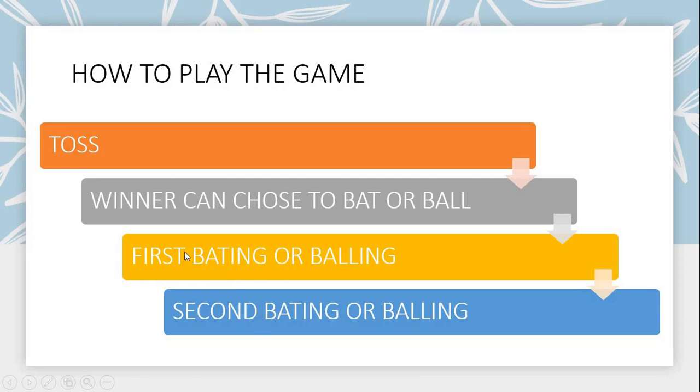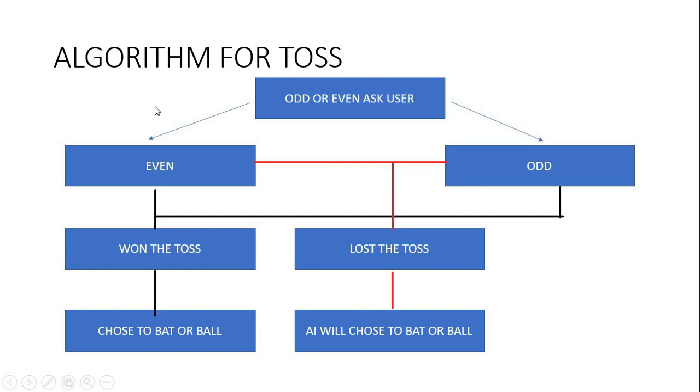If the winner chooses batting, they'll bat first and the opponent will ball second. If they choose balling, they'll ball first. How do we implement this in Python? First, let's create the algorithm. We ask the user odd or even.